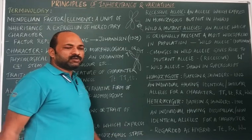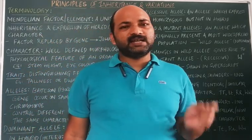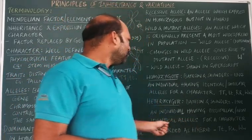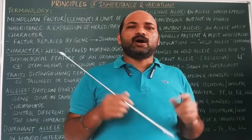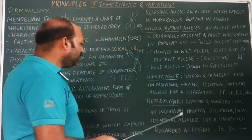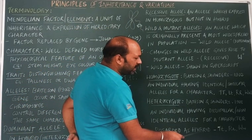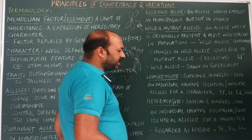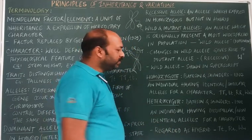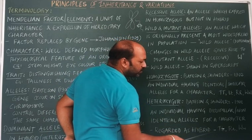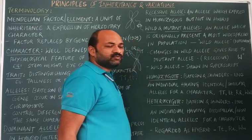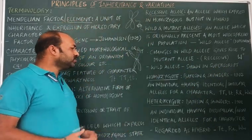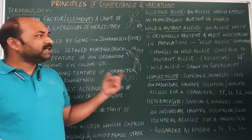Next is heterozygote. This term was also coined by Bateson and Saunders in 1902. A heterozygous individual or heterozygote refers to an individual having dissimilar or non-identical alleles for a character. For example, capital T small t — one is a dominant allele and the other is a recessive allele. Together we call this the heterozygous condition or hybrid. Capital R small r, capital W small w — where one is dominant and the other is recessive, meaning both alleles are non-identical to each other — that is what we call a heterozygous or heterozygote individual.